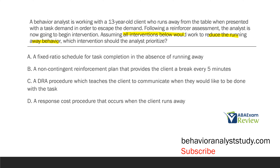When choosing interventions, first consider ethics — do no harm. Second, if we're going to replace a behavior, we need to teach something new — remember the fair pair rule. You decrease a behavior, you need to replace it with something functionally equivalent. In this case, the client runs away in order to escape, so the function is escape. If we reduce running away, we're also reducing access to escape, so we need to teach them something else to access escape or they'll start running away again.